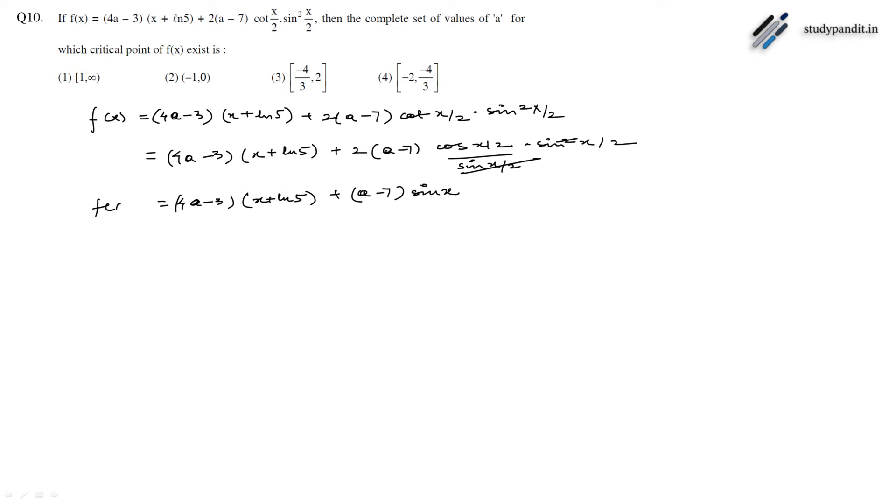This is f(x). To find all the critical points, we have to find f'(x). f'(x) will be (4a-3) times 1 plus (a-7) cos x.